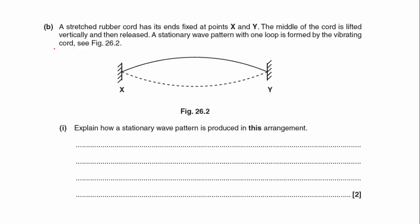Okay, now onto part B. A stretched rubber cord has its ends fixed at points X and Y. The middle of the cord is lifted vertically and then released. A stationary wave pattern with one loop is formed by the vibrating cord.